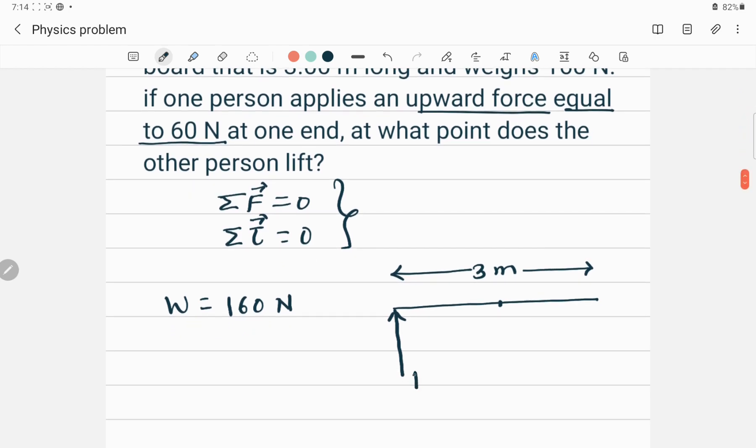And if one person applies upward force equal to 60 Newton, so this person for example this is force F1, F1 is equal to 60 Newton. At one end at what point does the other person lift this wooden board?